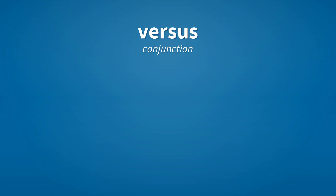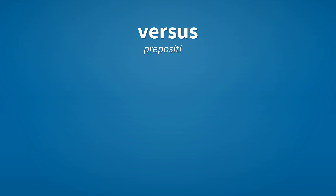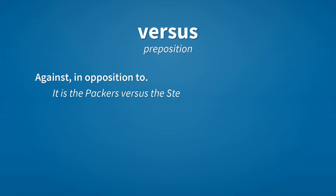vs. — Conjunction: Used to link two or more opposing or contrasting elements. Preposition: Against, in opposition to. Example: It is the Packers vs. the Steelers in the Super Bowl.